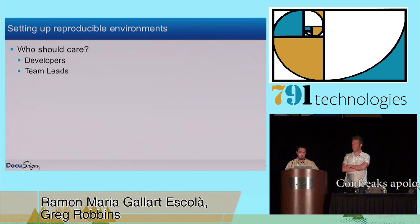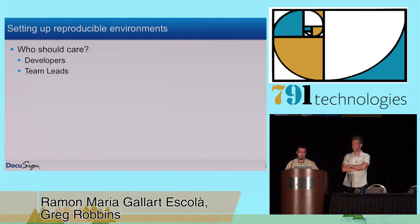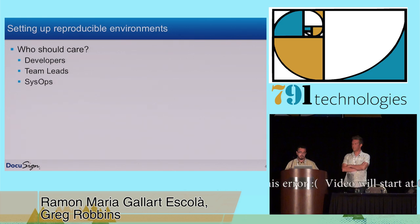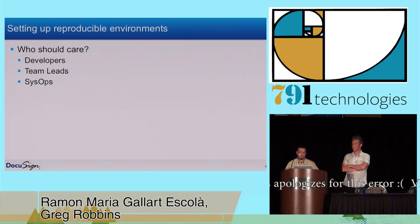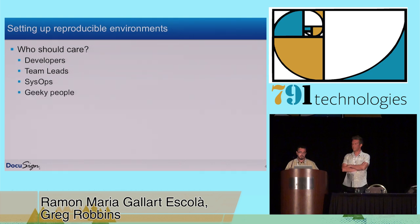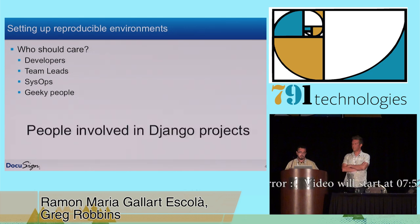Team leads should care too. As a team lead, I really like reproducible environments because I know that my team can get down to working on their tasks instead of dealing with broken environments and strange bugs that appear because things aren't consistent from one place to the next. SysOps people tend to appreciate this a lot because the work we do when setting up a development environment can also be applied to staging, tests, and production environments. And just geeky people in general — people involved in Django projects can probably benefit from having a way to set up environments.